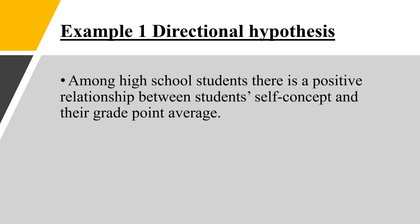Example number two, directional hypothesis: Among high school students, there is a positive relationship between the student's self-concept and their grade point average. Here, the word 'positive' has been identified — a positive relationship exists among high school students between self-concept and grade point average. So such a hypothesis would be classified as a directional hypothesis.